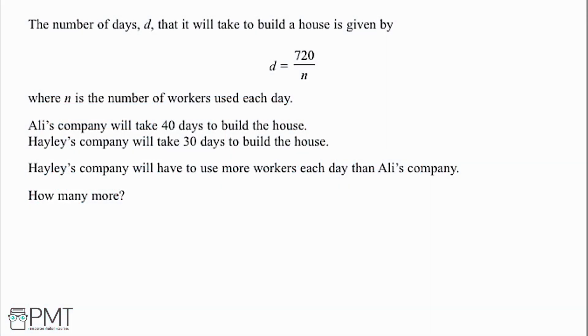The number of days, d, that it will take to build a house is given by d equals 720 divided by n, where n is the number of workers used each day. Ali's company would take 40 days to build a house, whereas Hayley's company would take 30 days to build a house. Hayley's company will have to use more workers each day than Ali's company, but we need to work out how many more.